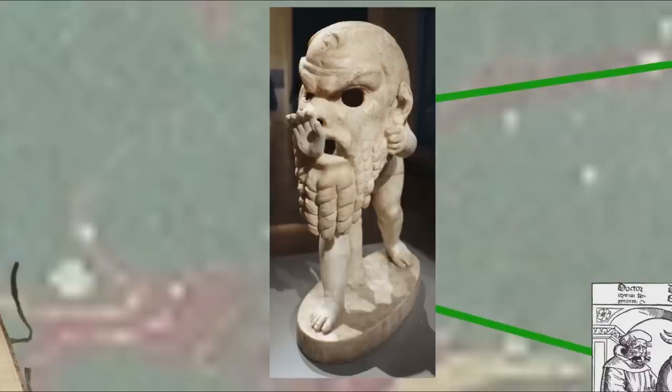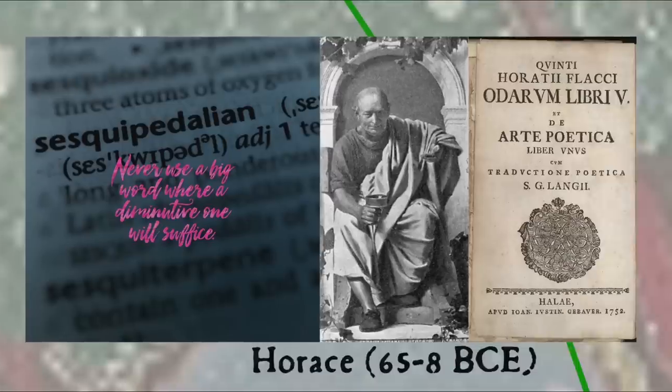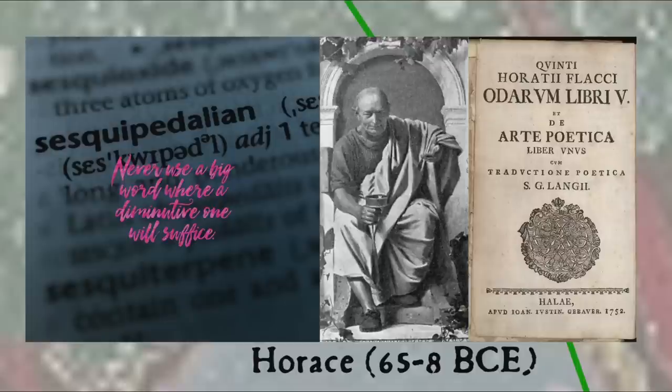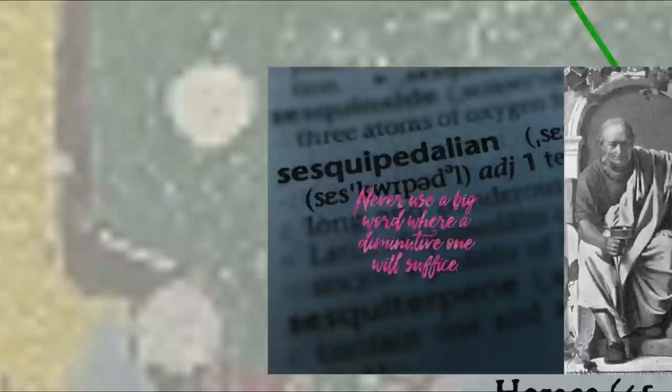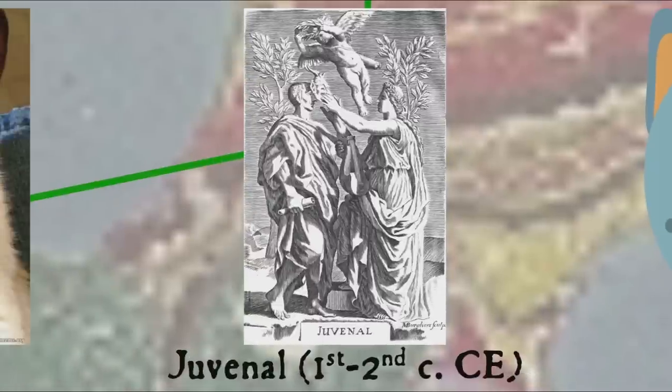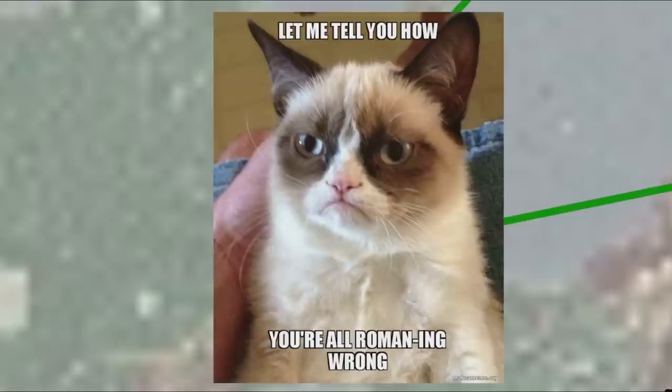The two most notable Roman satirists are our old friend Horace and Juvenal, and these two poets have lent their names to two categories of satire in the English tradition. Horatian satire is urbane and witty, and uses more gentle humor to point out human folly and failings. As Horace himself explained, he wished to laugh people out of their vices and follies. Juvenalian satire, on the other hand, is more serious in style, intending to evoke contempt and moral indignation in the reader.